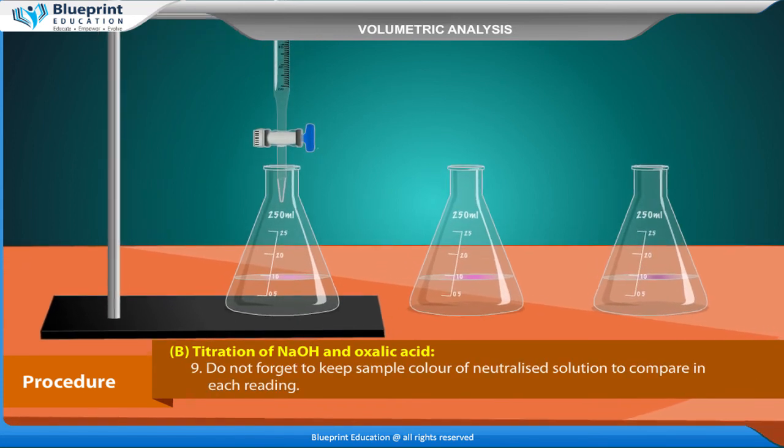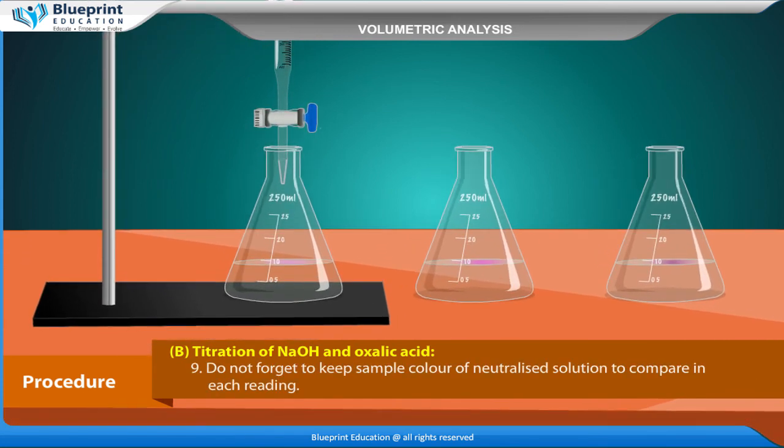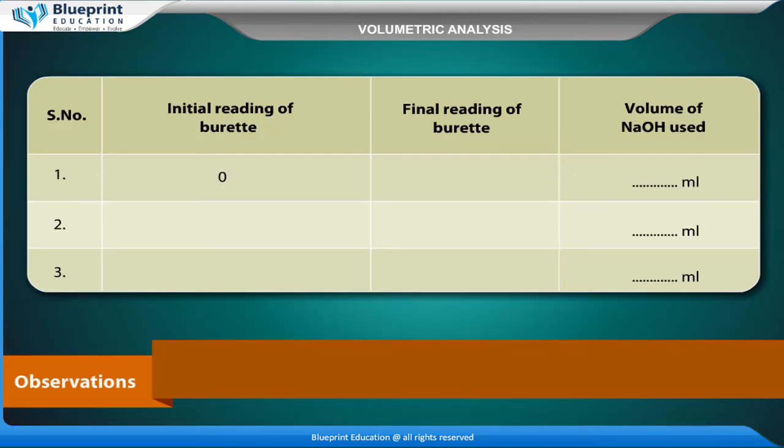Do not forget to keep sample color of neutralized solution to compare in each reading. Observations: Serial number, Initial reading of burette, Final reading of burette, Volume of NaOH used. Concordant reading is equal to X. Volume of pipette is equal to 10 ml.